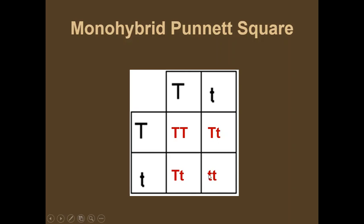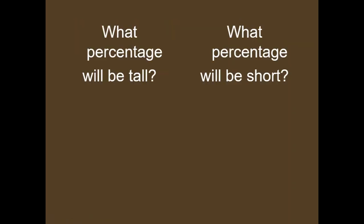If it only has little t's, they're going to be short. Because remember, big T's are dominant, and they're going to overshadow the little t's if they're in there. So what percentage are going to be short? 25%. Okay, so what percent will be tall? We said 75%. What percentage will be short? 25%.